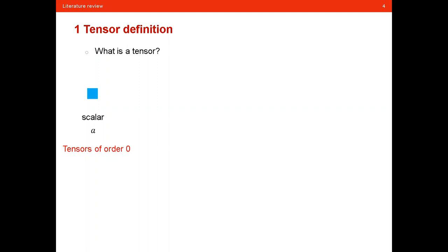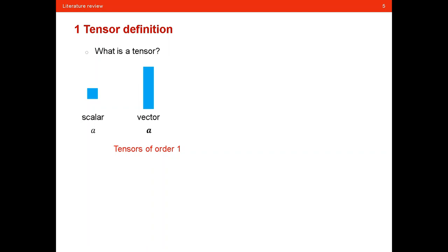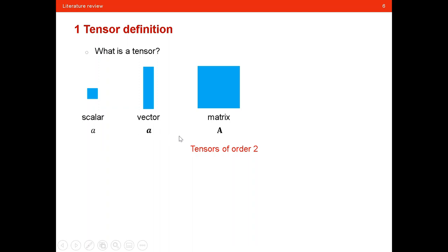When we enlarge the data along one dimension, we get a vector, which is a tensor of order one. For example, if you stack multiple people's heights in a row, you get a vector with one dimension. Taking a step further, when we consider two dimensions, we have the familiar definition of a matrix, which we see in linear algebra. A matrix can be regarded as a tensor of order two, where one dimension denotes people and the other denotes time.